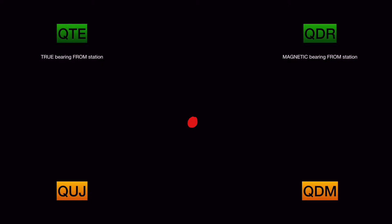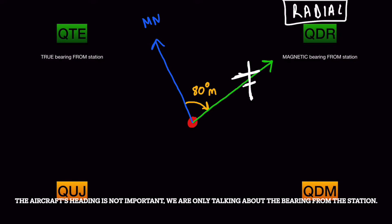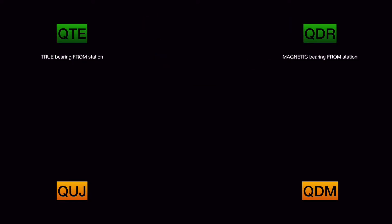Another term for QDR is 'radial.' If a question says the aircraft is on a radial of 080 degrees, that means the aircraft's QDR is 080 degrees — measured from the magnetic north pole. So if the ATC says QDR 080 degrees, or that the aircraft is on a radial of 080 degrees, the aircraft is somewhere along the line that makes an angle of 080 degrees from magnetic north.